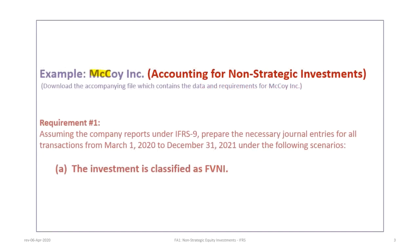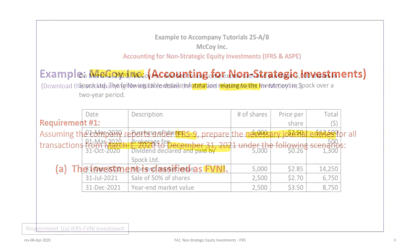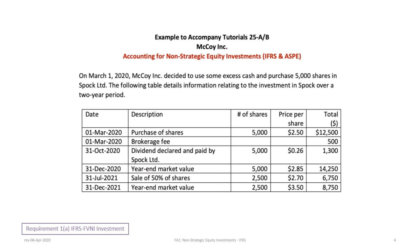This tutorial is based on the McCoy Inc. example, so please make sure that you download the correct accompanying file which contains the data and the requirements for McCoy Inc. There are two requirements for this particular problem, the second of which will be covered in Tutorial 25B for ASPE. This tutorial will focus on Requirement 1, Parts A and B. Assuming the company reports under IFRS 9, we need to prepare the necessary journal entries for all transactions from March 1, 2020 to December 31, 2021. If you have the accompanying data file, this is a snapshot of what you should see.